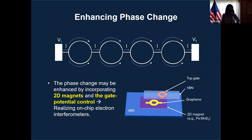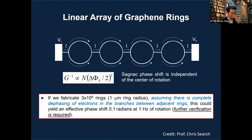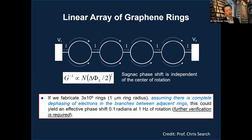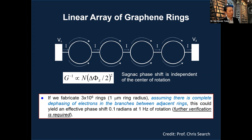An idea from Stevens faculty member Dr. Chris Seraydarian's 2008 paper: a graphene ring shows coherent transport of electrons, then a branch causes complete dephasing, then another coherent transport segment — and sensitivity could be proportional to the number of rings. For example, if we fabricate three million rings of one-micron radius on a small substrate, assuming complete dephasing of electrons in branches between adjacent rings, this could yield an effective phase shift of 0.1 radians at 1 Hz of rotation. This is a rough approximation that needs to be verified with modeling collaborators.